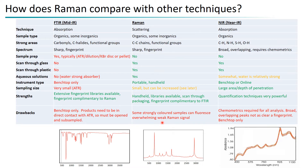With Raman, we get some influence from fluorescence — where the sample absorbs the laser light and emits wavelengths across a broad range, which can overwhelm the weak Raman signal. This is typically seen more on highly coloured materials and some natural products. We do have techniques for removing mild fluorescence, but for instance plant leaves could not be identified using this wavelength because they absorb the light and fluoresce back.